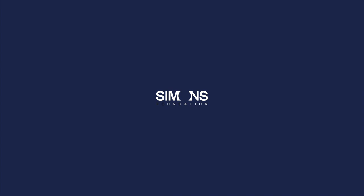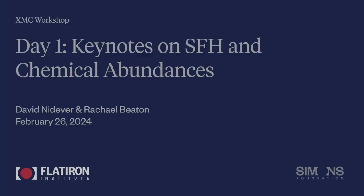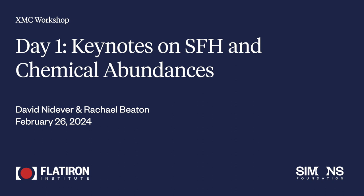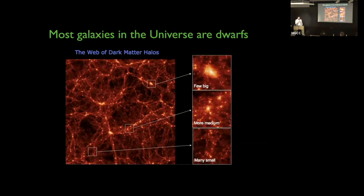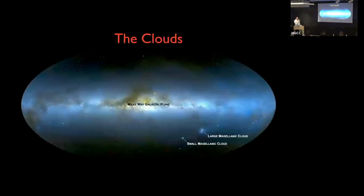One of the overarching goals in modern astronomy is trying to figure out how galaxies form and evolve. As we know, most galaxies in the universe are actually dwarf galaxies, and because they are intrinsically faint and pretty far away, it's hard to study them. Luckily we have two that are close by — the Clouds — about 55 kiloparsecs away, the largest satellites of the Milky Way and some of the closest.